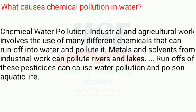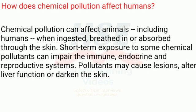What causes chemical pollution in water? Chemical water pollution involves industrial and agricultural work, which uses many different chemicals that can run off into water and pollute it. Metals and solvents from industrial work can pollute rivers and lakes. Runoffs of pesticides can cause water pollution and poison aquatic life.